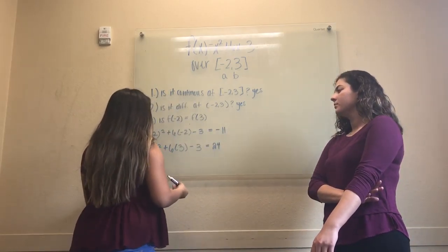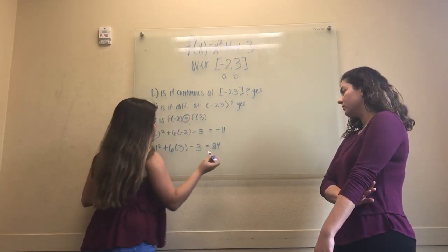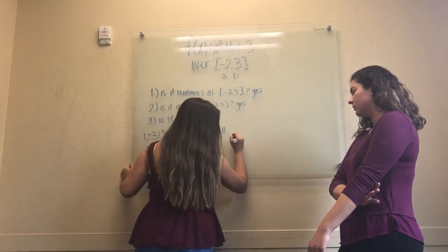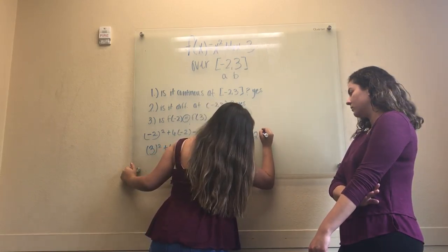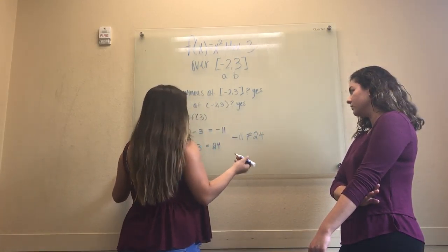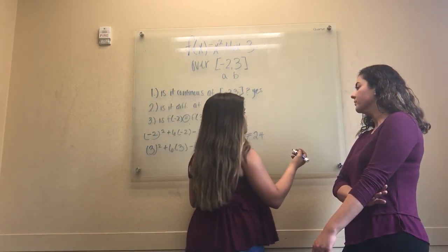Referring back to condition 3, it was asking us if the two equations were equal. In our case, they weren't, because negative 11 is not equal to 24. So our overall conclusion is that Rolle's rule is not applicable because it fails condition 3.